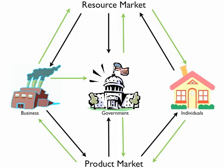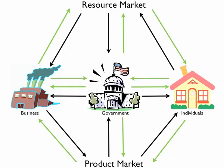Government gets its revenue through taxes. Businesses pay corporate taxes, and individuals pay income and sales taxes. Government can also give money to businesses in what is called a subsidy — an example would be the government giving money to General Motors — or give transfer payments to individuals, such as Social Security. Government also provides public goods and services to both businesses and individuals, such as the military, education, and our highway system.